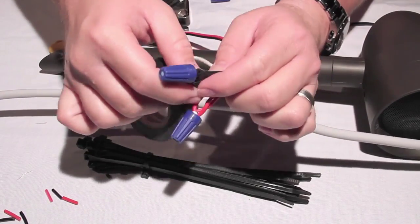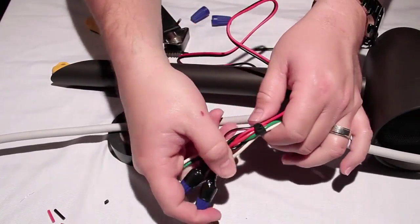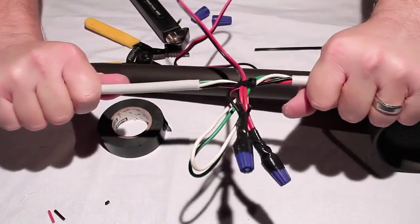Wrap the connection point between the wire and wire nut with electrical tape. Once finished, group the wires together and secure them with a wire tie to relieve any strain.